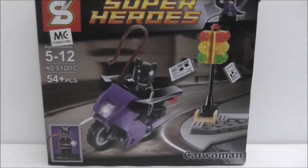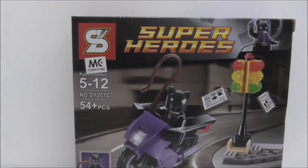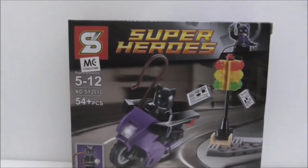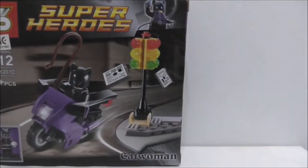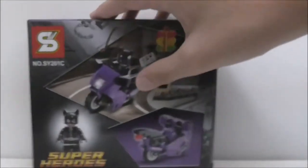So this is the box here. You can see it's recommended for ages 5-12 and this is a SY201C. It comes with 54 pieces and comes with Catwoman and the Catwoman Cat Cycle. This is the top, bottom, the side, the other side, and this is the back here.